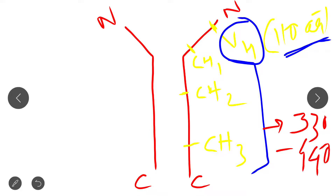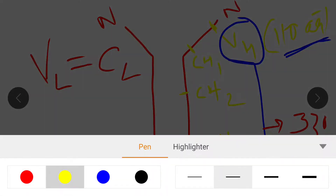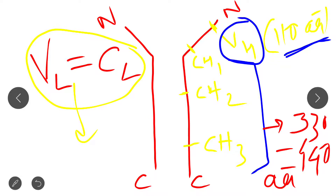So you can see that the constant region of the heavy chain is three to four times longer than the variable region of the heavy chain, at 330 to 440 amino acids. But in case of the light chain, the variable region and constant region are both equal at 110 amino acids. The constant region of the heavy chain is much longer than both the variable and constant regions of the light chain.